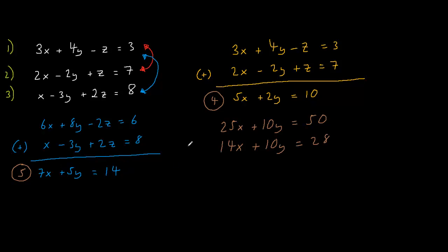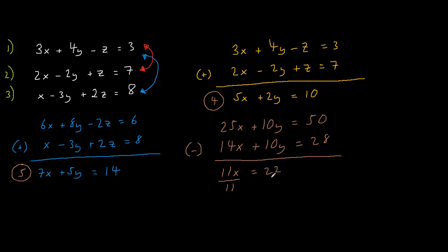Now I can subtract equation 5 from equation 4. So 25x minus 14x is 11x, 10y minus 10y is 0, and 50 minus 28 is 22. From here I divide both sides by 11, so x equals 2.